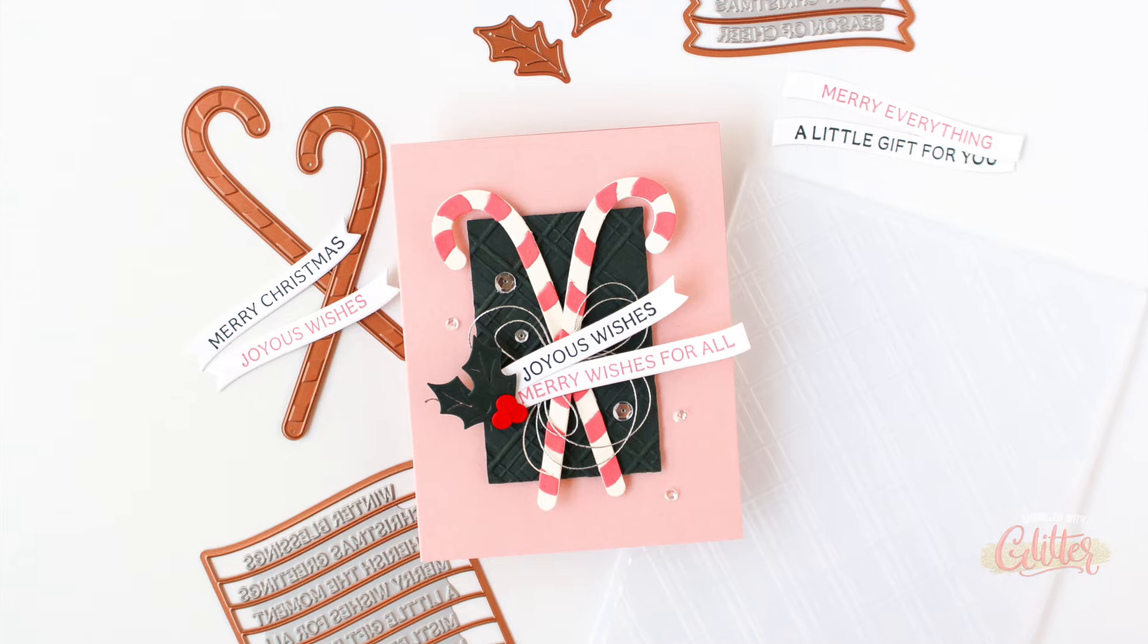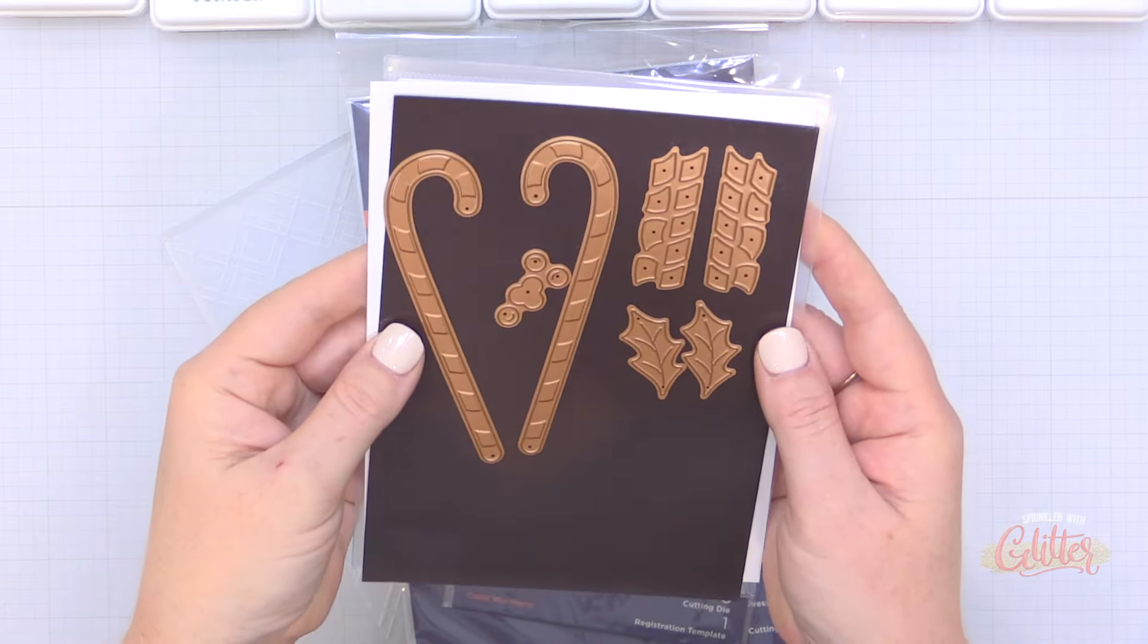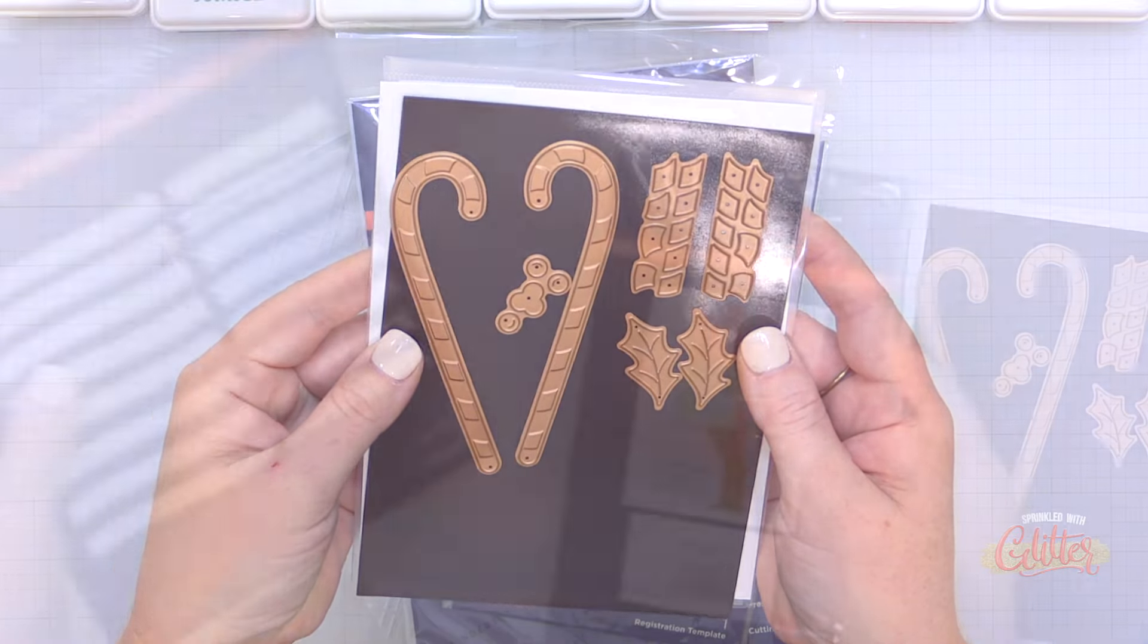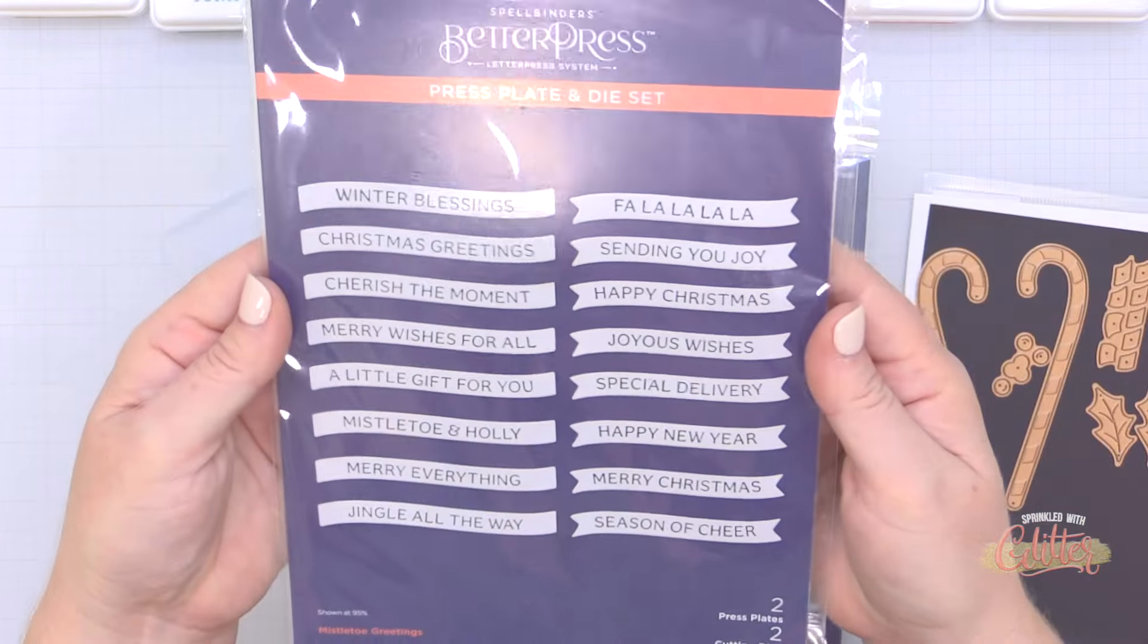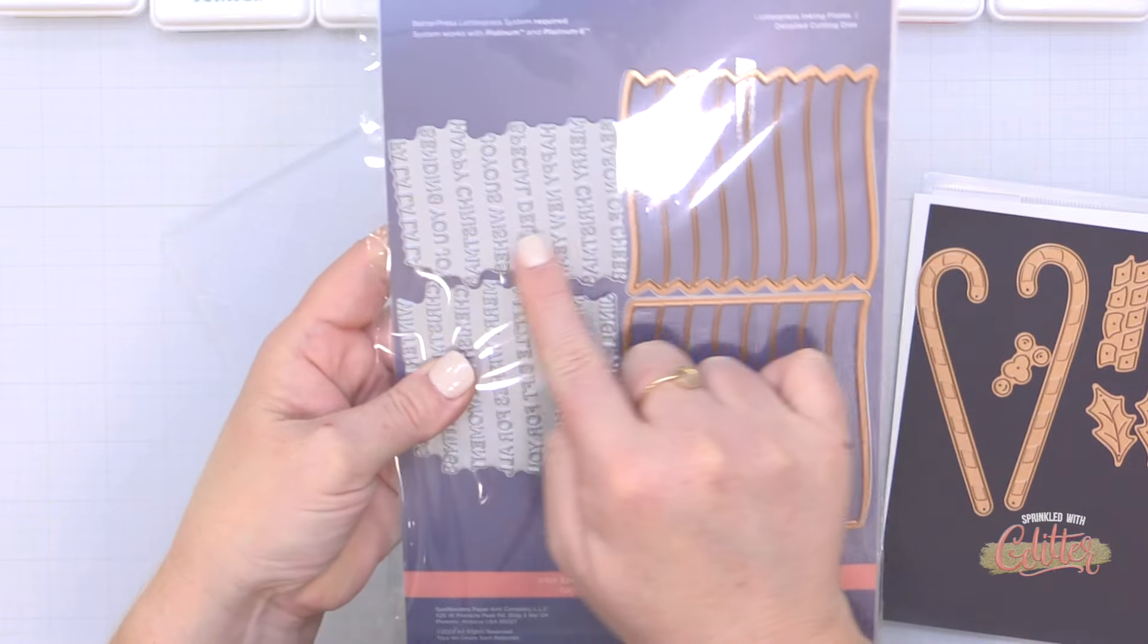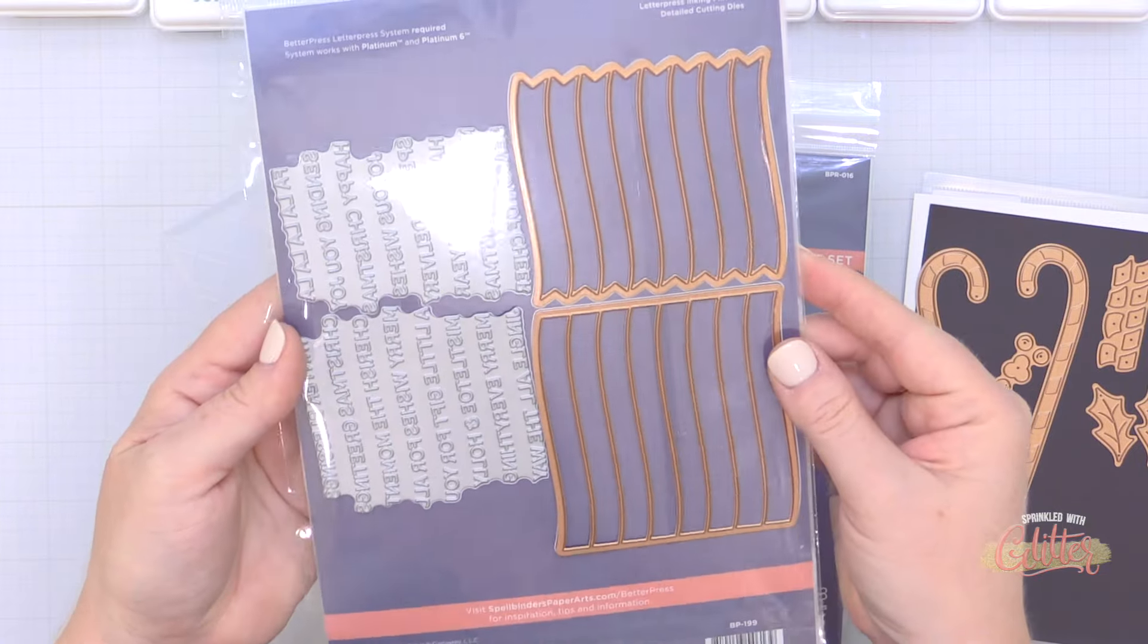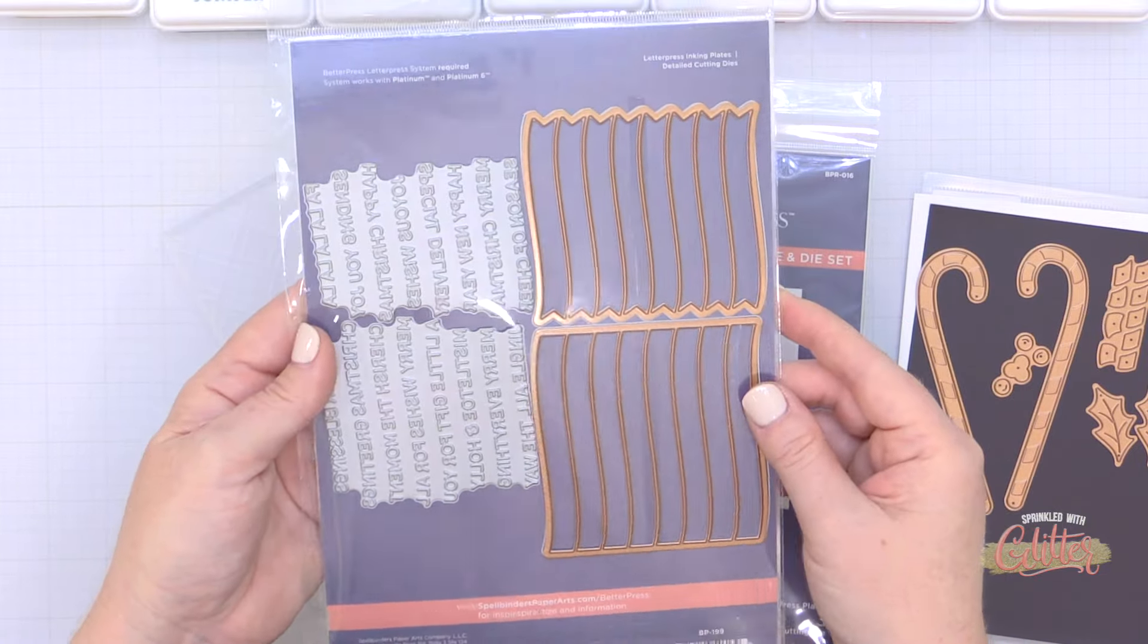I'm using a few of the colors from this palette and I will be using this palette over and over again this holiday season. I am featuring the candy canes and holly die set from Spellbinders as well as the mistletoe greetings better press plate set and coordinating dies. I love this because you can create a bunch of sentiments at once.